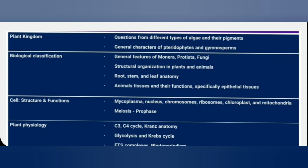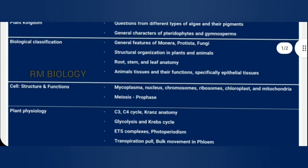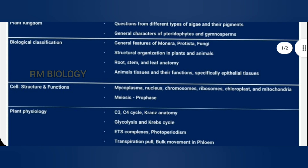Third chapter, biological classification — general features of Monera, Protista, and Fungi. Structural organization in plants and animals: root, stem, and leaf anatomy.